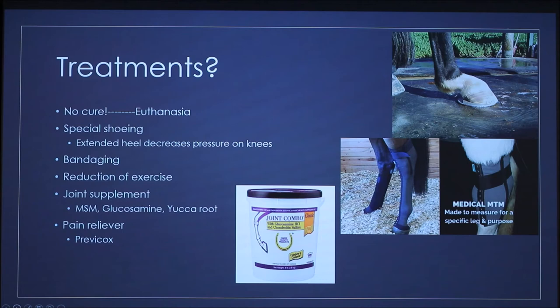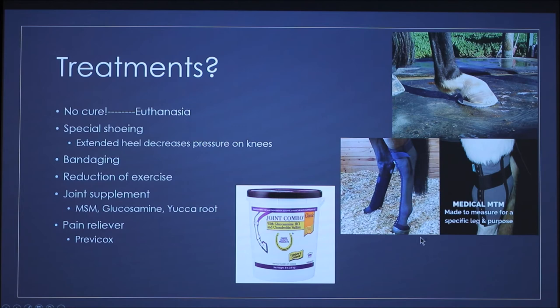Right now there's no cure — the end stage is euthanasia once it reaches a really painful point. But when horses aren't in a lot of pain but can no longer be ridden, you can do some special things. Special shoeing with an extended heel can decrease pain and pressure on the knees. There's also bandaging — a compression sock can be applied to help with swelling and blood flow.